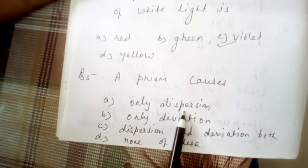Last question: a prism causes — option A, only dispersion; option B, only deviation; option C, dispersion and deviation both. The most appropriate answer is C — dispersion and deviation both.